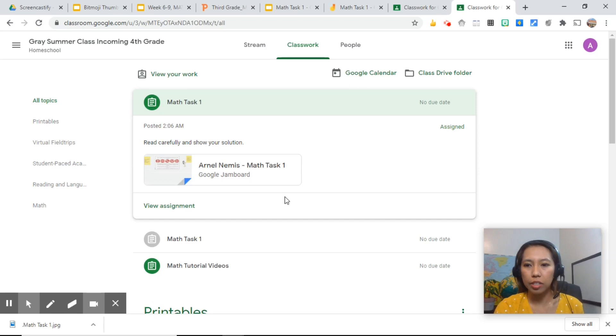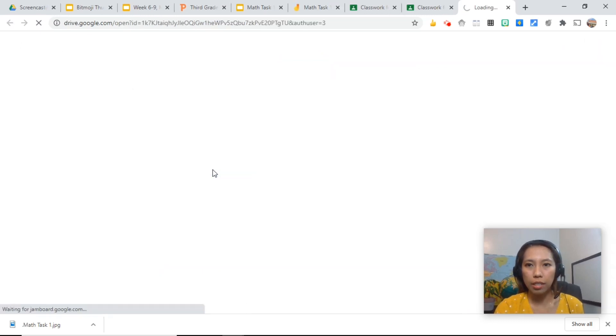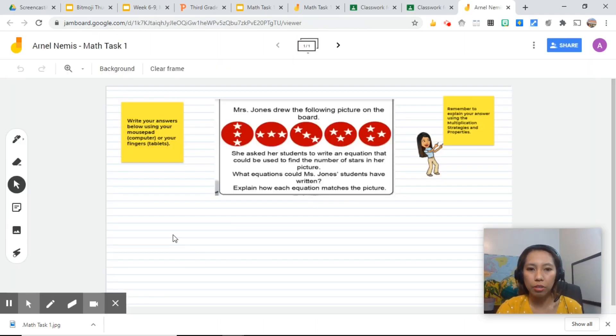This is how they can access it from their computer. And later, I'll show you how they can access it on their iPad. Once they click the task, it will bring them to jamboard.google.com. Now they can use their cursor to answer this.